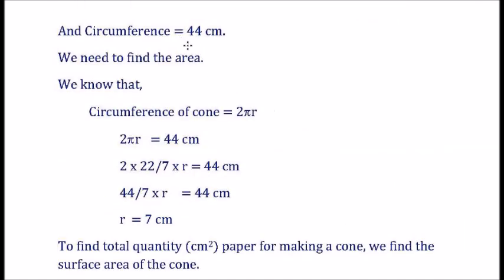We want to find how many square cm paper would it be used to make 4 such caps. So, here we need to find the radius of the cone. We know that the circumference is equal to 2πr. Given that circumference is given as 44 cm.